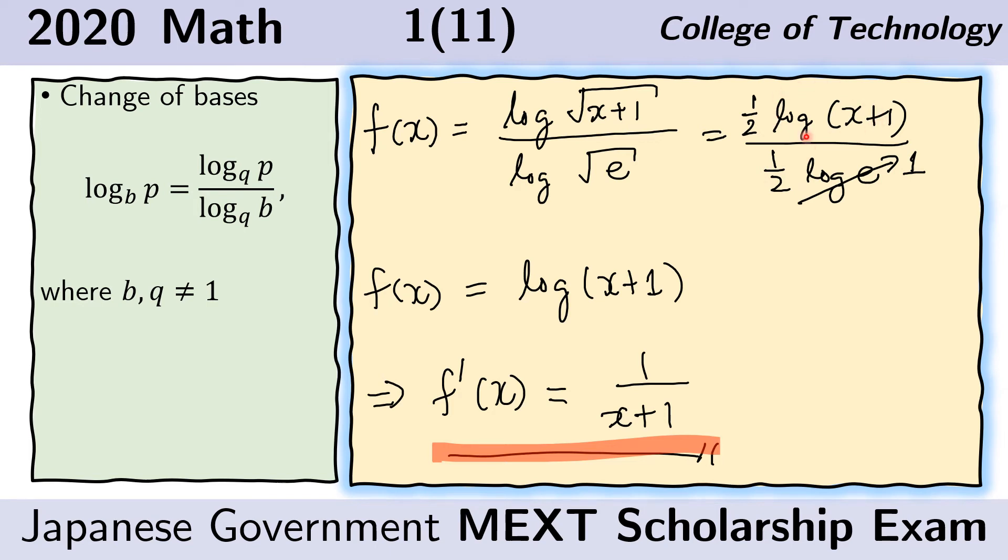Again, log here is a natural logarithm. So the derivative is just 1 over the argument here times the derivative of this argument, which is just 1. And so, this is our final derivative.